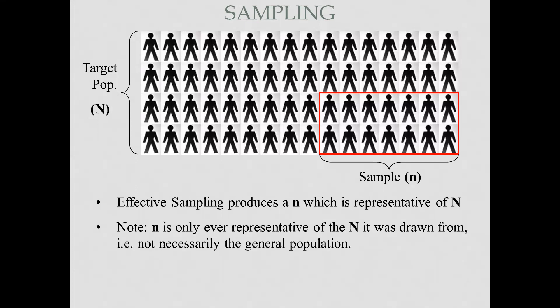The small n is only ever representative of the capital N and is drawn not necessarily from the general population. We have different strategies of sampling — that is, different ways of choosing people from the target population. Your target population might be females, males, children, educationists, or politicians, depending on your type of study. The same applies to experimental and quantitative research as well. Strategies remain the same, though the population may differ from one field to another.